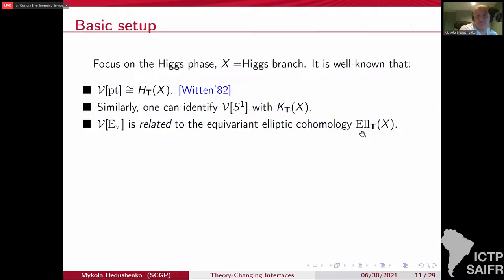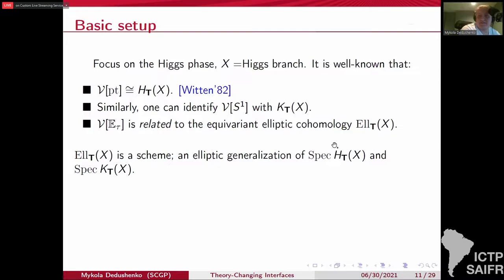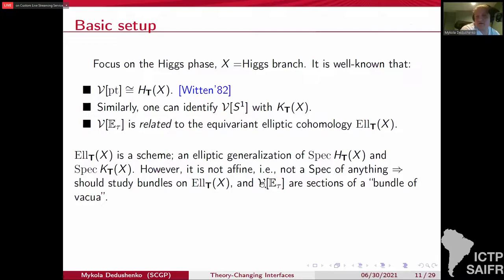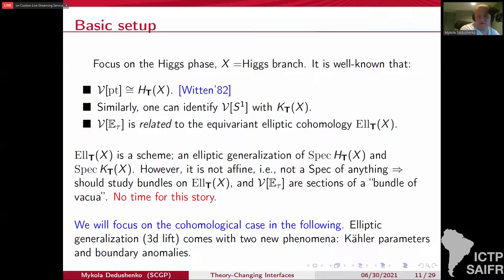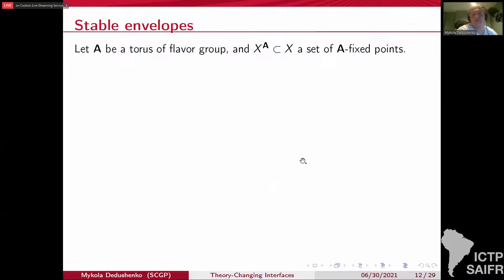But not just strictly equal. Because this EL_T of X, this object, at least following the same approach that Okounkov and collaborators followed, it's not a space. It's a scheme that generalizes the spec of cohomology ring. But in the elliptic case, it's no longer fine. So it's not really a spec of anything. So you just study bundles over this EL_T. And there is an actual bundle of vacua whose sections are related to this space. Unfortunately, I don't have time for this story. So I'll just focus on the cohomological case. It is simpler to describe in a short amount of time.